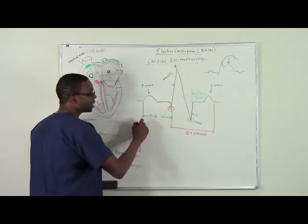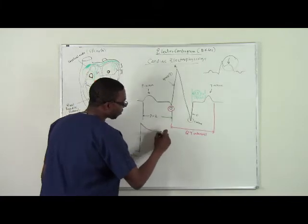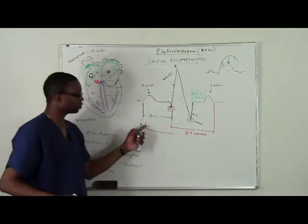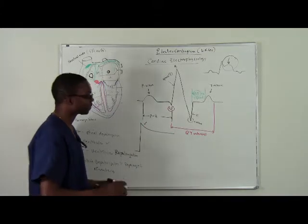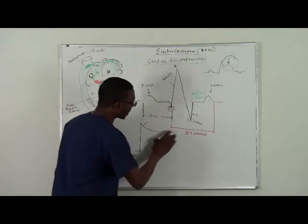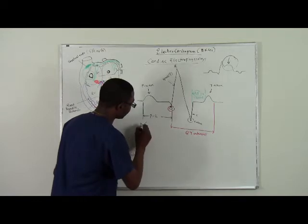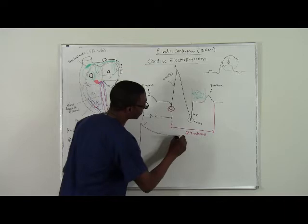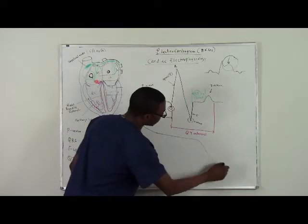We get that upstroke potential, and eventually what happens? We get plateau, we get the initial repolarization, influx of calcium, right? So we get, let's draw it properly, like that.